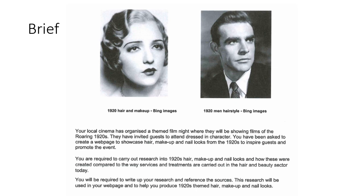Today is the day you have been given your 2024 GCSE era for the Hair and Beauty Technical Awards, and the era this year is going to be the 1920s. Here is the brief: your local cinema has organised a themed film night showing films of the Roaring 1920s. Guests are invited to attend dressed in character, and you have been asked to create a webpage to showcase hair, makeup and nails looks from the 1920s to inspire guests and promote the event.